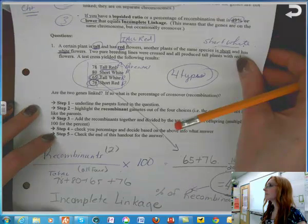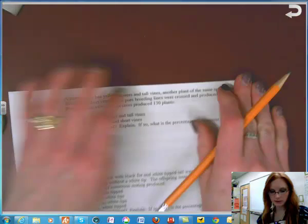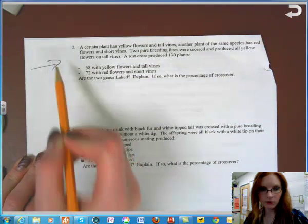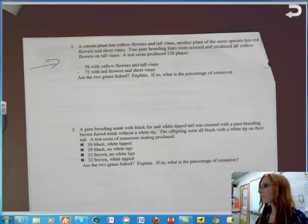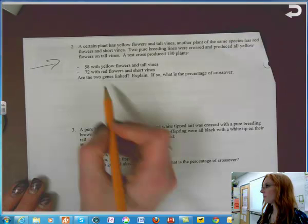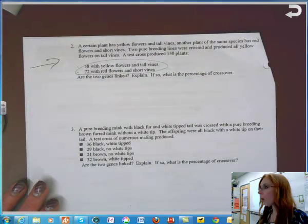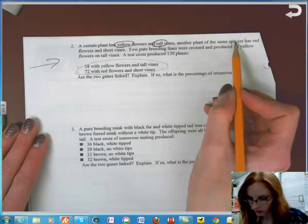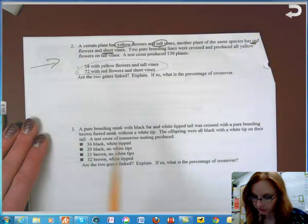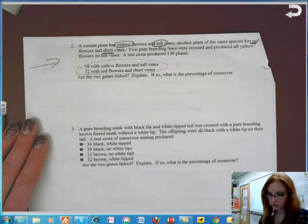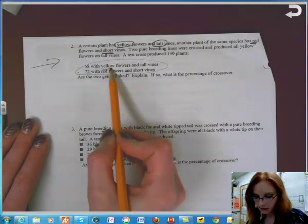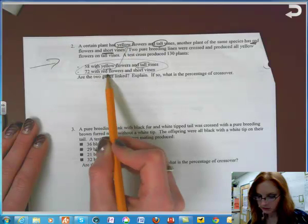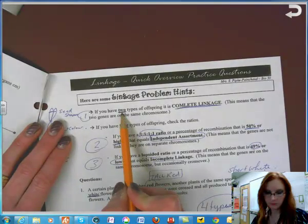Okay, let's try a couple more questions and then you can practice. How many of you could look at this question and tell me what it is already? It's complete linkage. How did we know? There's only two types of offspring. Now, always read the question just to make sure. So it says a certain plant has yellow flowers and tall vines. So there's my one parent crossed with another plant of the same species that has red flowers and short vines. Two pure breeding lines were crossed and all produced yellow flowers on tall vines. A test cross produced 130 plants. Yellow, tall. That's exactly like this parent. Red, short. Exactly like that parent.